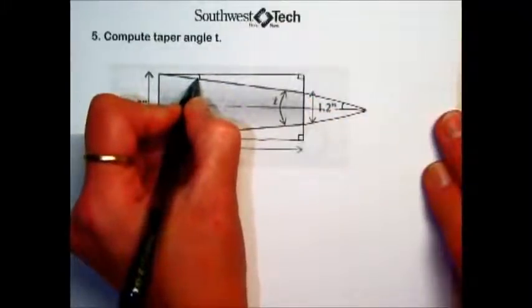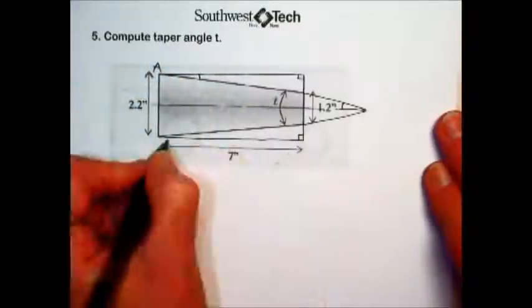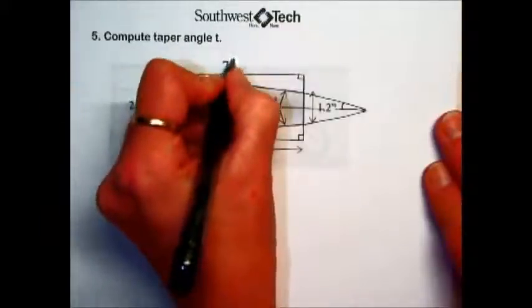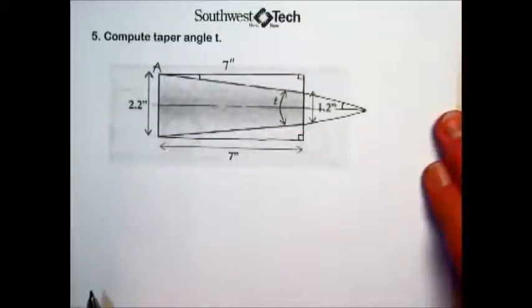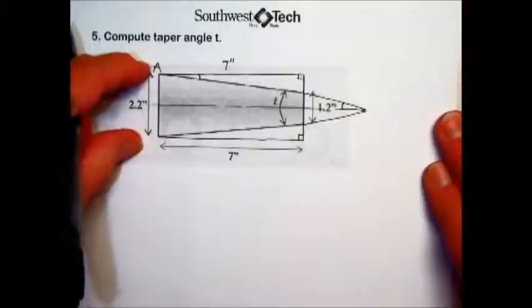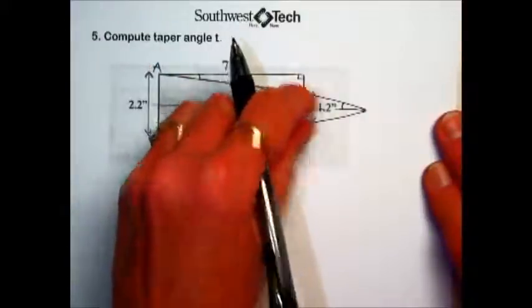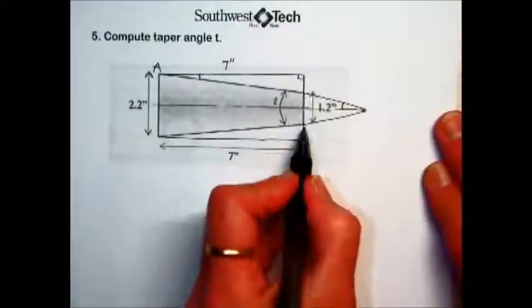I have two right triangles. I'm interested in the measure of this angle up here. We'll call that A. I know this span is 7 inches, the length of our taper. We know the overall width of the taper on the left-hand side is 2.2. On the right end, it is 1.2.